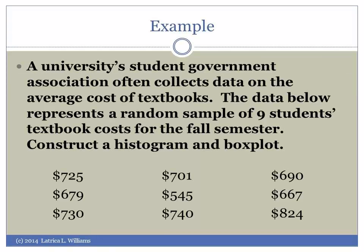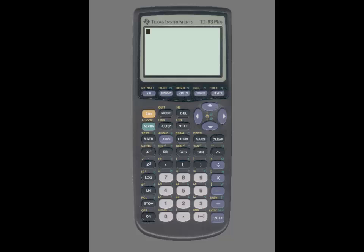In this video example, I'm going to show you how to use the TI-83 calculator to create a histogram and box plot. For example, a university's student government association often collects data on the average cost of textbooks. The data below represents a random sample of nine students' textbook costs for the fall semester. We're going to construct a histogram and a box plot using our TI-83 calculator.